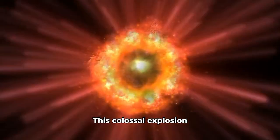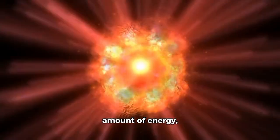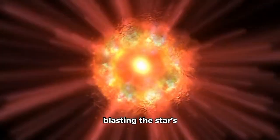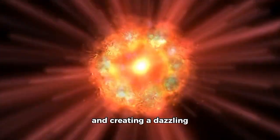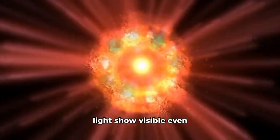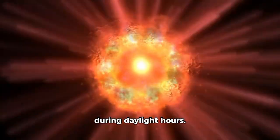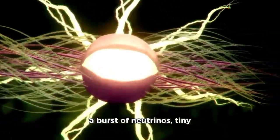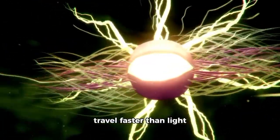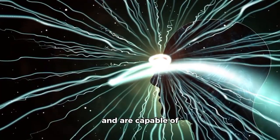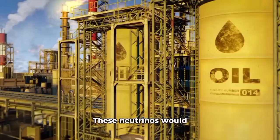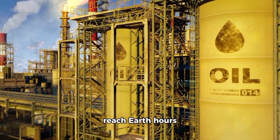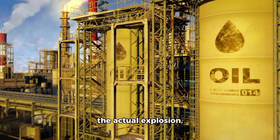Supernova. This colossal explosion releases an immense amount of energy, blasting the star's outer layers into space and creating a dazzling light show visible even during daylight hours. If Betelgeuse detonates, the first signal would be a burst of neutrinos, tiny subatomic particles that travel faster than light and are capable of escaping the star. These neutrinos would reach Earth hours before the light from the actual explosion.